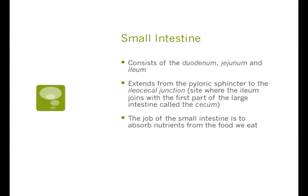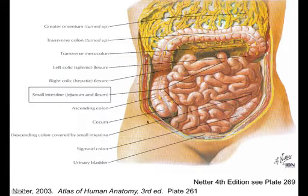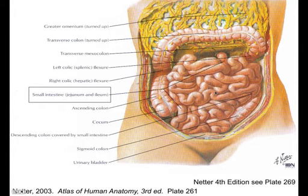The small intestine consists of the duodenum, the jejunum, and the ileum. It extends from the pyloric sphincter to the ileocecal junction, which is where the ileum joins the first part of the large intestine called the cecum. The job of the small intestine is to absorb nutrients from the food that we eat.